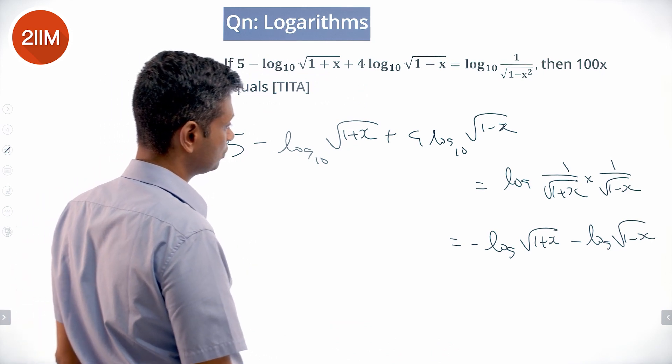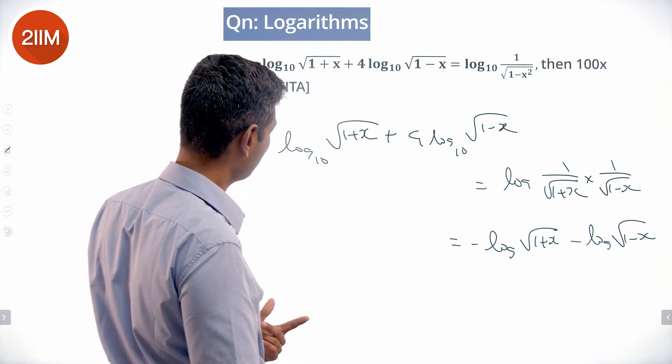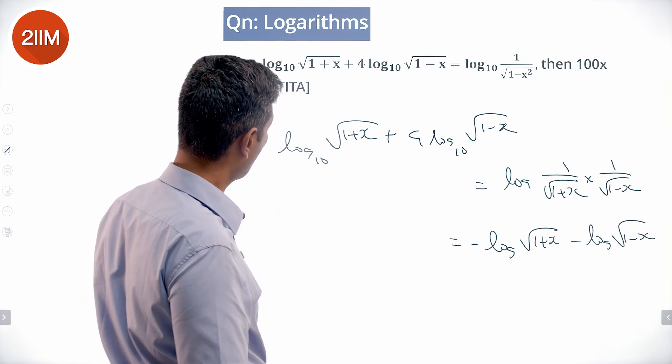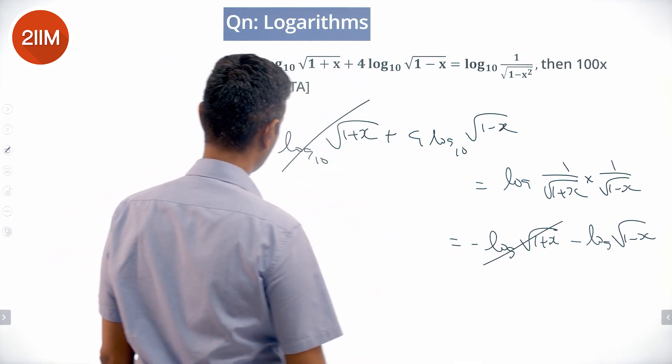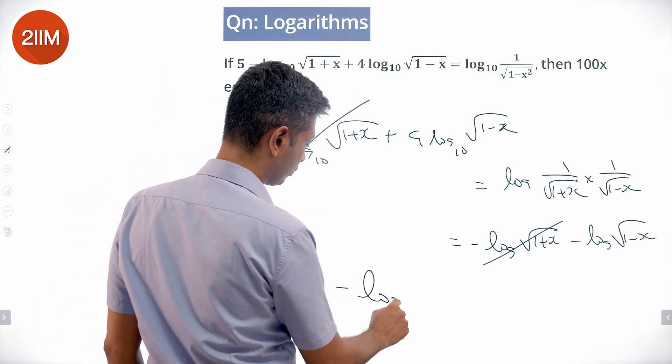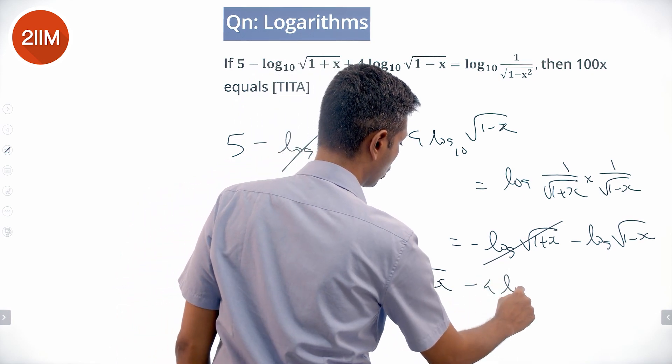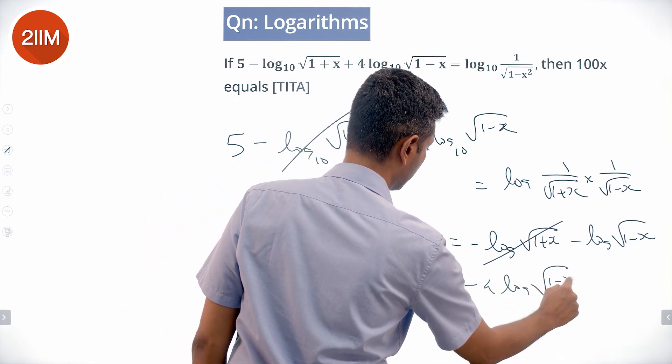So I can move some log this side or everything that side. I can shift something around. Minus log of 1 plus x minus log of 1 plus x, these two will get cancelled. Or 5 equals minus log square root of 1 minus x minus 4 log square root of 1 minus x. 5 equals...